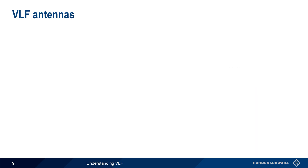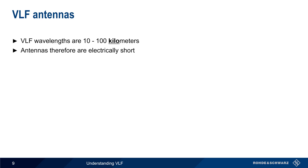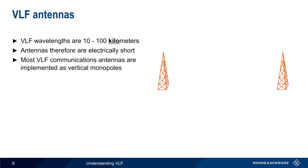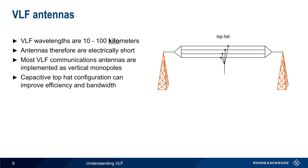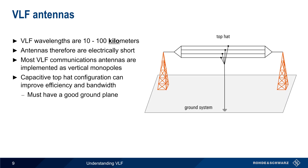Now let's move on to antennas. Recall that VLF wavelengths are on the order of 10 to 100 kilometers, and this means that VLF antennas are always electrically short — that is, they have a length that's shorter than one wavelength. Most VLF communications antennas are implemented as vertical monopoles, and a capacitive top hat configuration is commonly used to improve both efficiency and bandwidth. This arrangement does, however, require a good ground plane, something we'll cover in more detail in just a few moments.